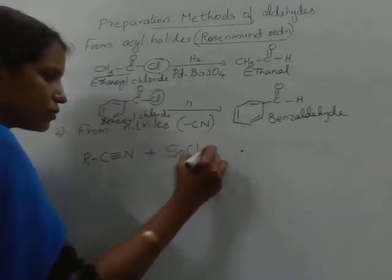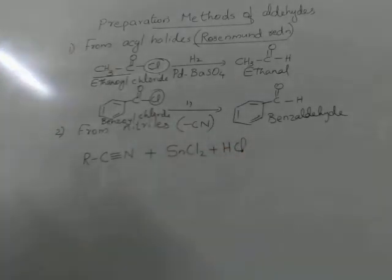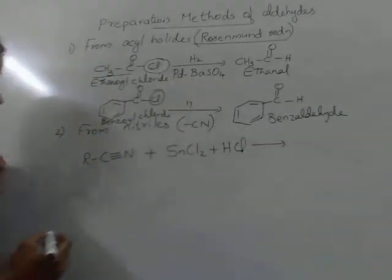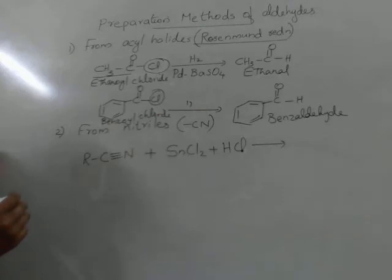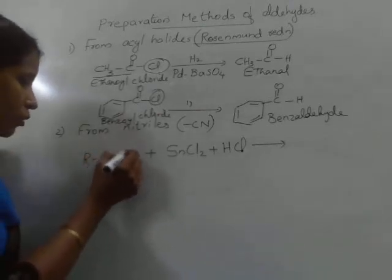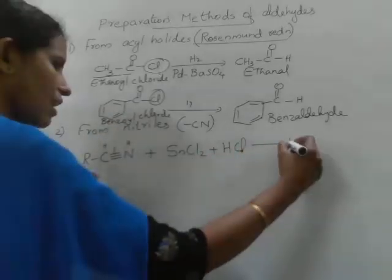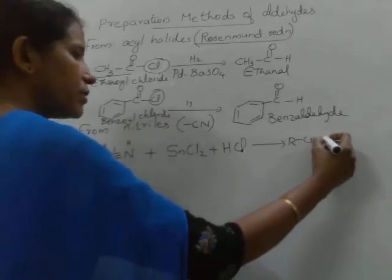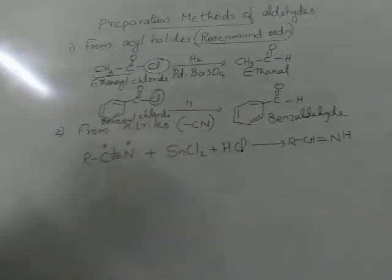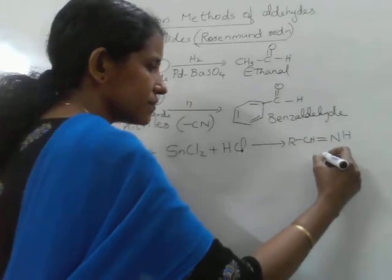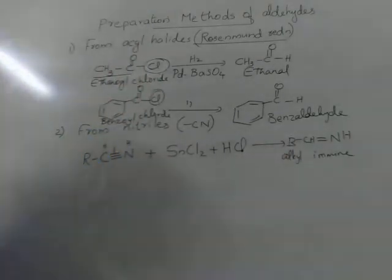The reducing agent used is stannous chloride, SnCl₂, and hydrochloric acid. With stannous chloride and hydrochloric acid, reduction takes place. Initially an intermediate is produced: hydrogen is added to the carbon–nitrogen triple bond, one of the pi bonds breaks, one hydrogen is added to carbon, one hydrogen to nitrogen, and we get an intermediate CH=NH, a C=N bond-containing compound called an imine — specifically an alkylimine, since there is an alkyl group present.